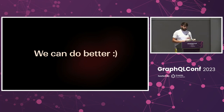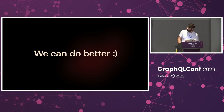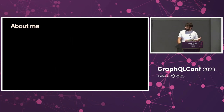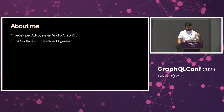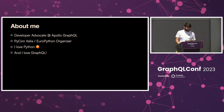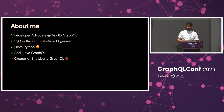I think we can do much better. I wanted to show you a slightly different approach to Code First that takes advantage of the fact that we're using a programming language to write the schema. But first, let me introduce myself. My name is Patrick, I'm a developer advocate at Apollo GraphQL, and I also organize PyCon Italy and EuroPython. I combined my love of Python and GraphQL with Strawberry, a GraphQL library that uses Python type hints to create GraphQL APIs.